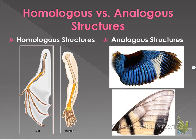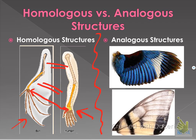Looking at the examples: for homologous structures, here's a bat wing versus a human arm — these highlighted bones are the same. We have the same bones in our arms but do different things with them. A whale fin, dog leg, or cat leg would also share those same bones. For analogous structures, a bird has feathers and is warm-blooded compared to an insect — they both fly, but they come from completely different backgrounds.